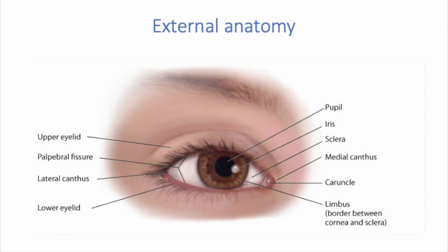The palpebral fissures are structures of the eye that form elliptical open spaces between each eyelid — from the upper eyelid to the lower eyelid. When your eyes are closed, your lid margins should approximate completely, meaning your upper and lower eyelids are touching one another. You should not be able to see the palpebral fissure open at all.